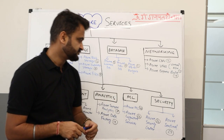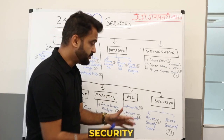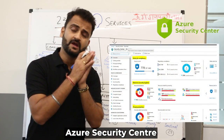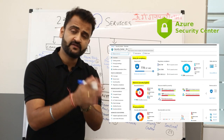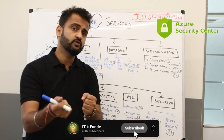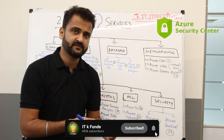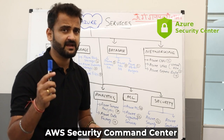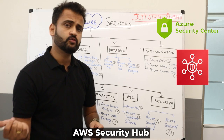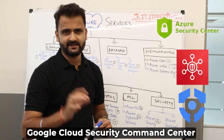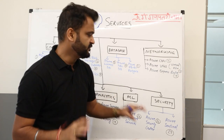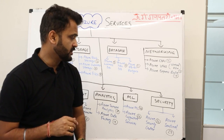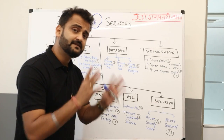Under security, we have Azure Security Center — a common place for your security management and monitoring all kinds of threats that could impact your Azure services. On AWS we have AWS Security Hub, and on Google Cloud we have Cloud Security Command Center. These are similar services with similar purposes across all three cloud providers.